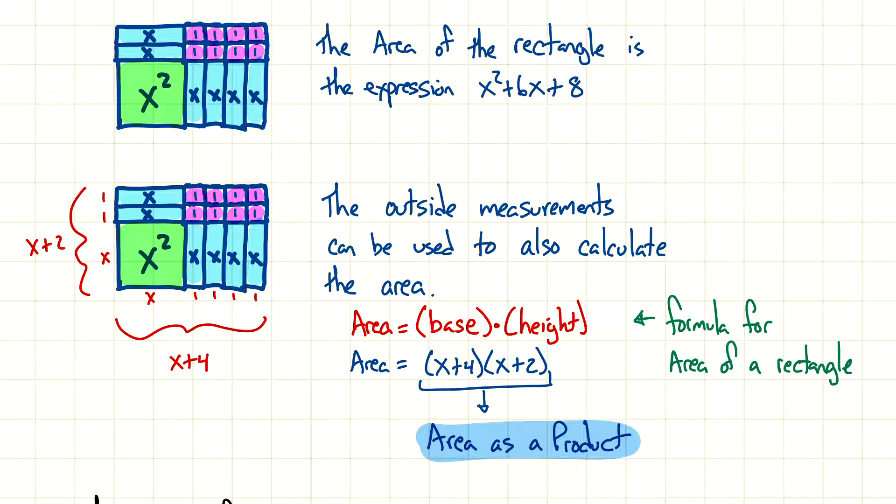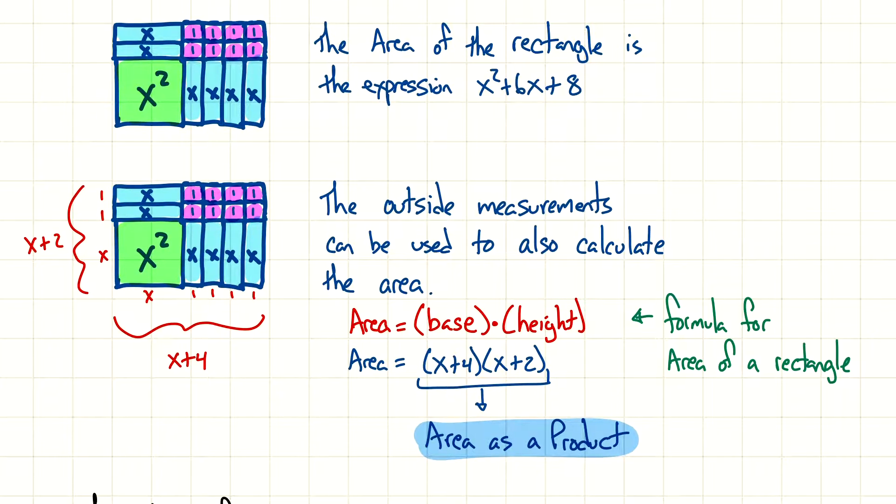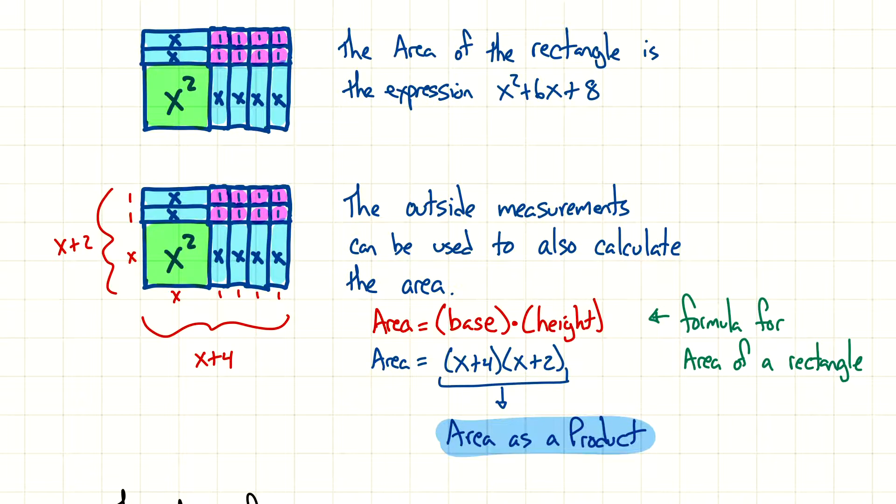Because we know the area is x squared of this tile x squared, that must mean that the dimensions of that tile are x and x. So, x times x gives you x squared. And the same thing with the tile that has an x. The dimensions are x and 1. So, x times 1 is the same thing as x. And also 1 times 1 gives you 1.